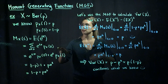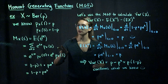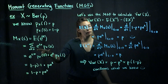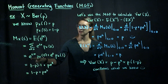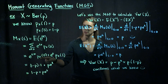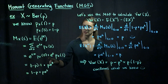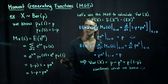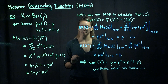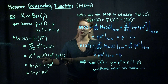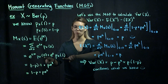Now let's get into specifically the Bernoulli case. We know it takes on two values, 0 and 1. So let's evaluate this for 0 and for 1 and add them together. We have e to the t times 0, times the PMF evaluated at 0, plus e to the t times 1, times the PMF evaluated at 1.